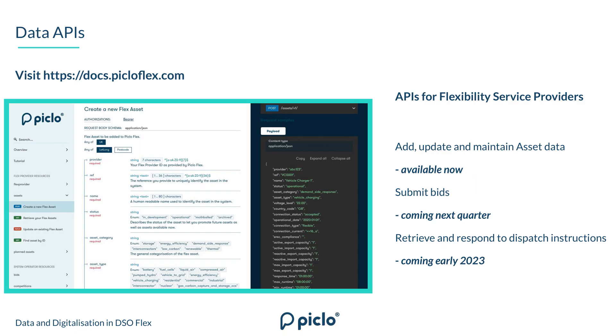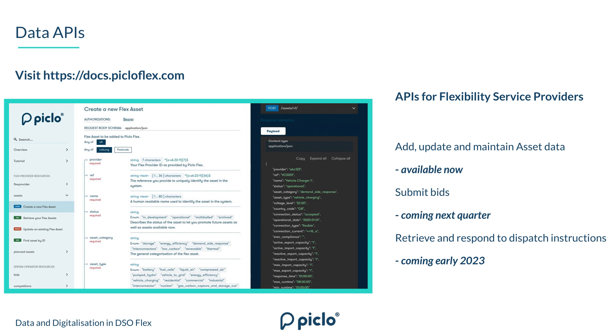On the note of APIs, we're starting to produce quite a few public APIs. As a flex provider, you're already able to maintain your asset data on Piclo via API — I encourage everybody to visit the docs site, the team is very proud of it, so have a look and give us your feedback. Coming very soon you'll also be able to submit bids by API. And later on, in early next year, we're looking at the operational side and APIs there, because it's going to be absolutely key to an efficient and stable operation of flexibility dispatching.